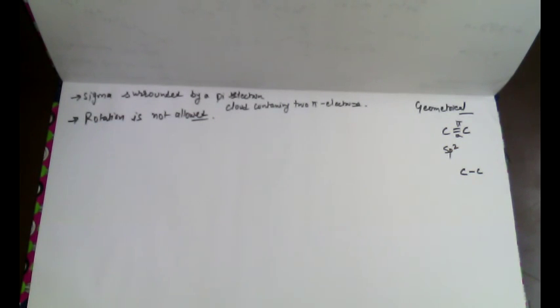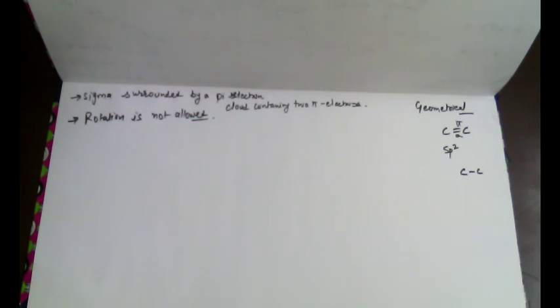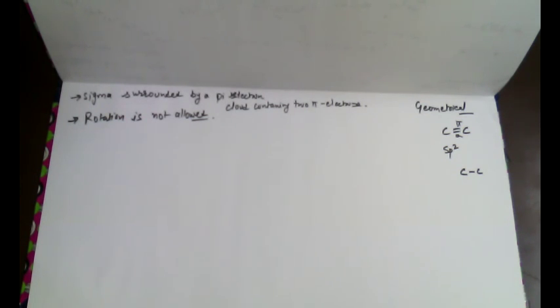For rotation to occur, a large amount of energy is needed, which is not available at room temperature unless supplied from an outside source. In simple terms, rotation in a double bond is not allowed.